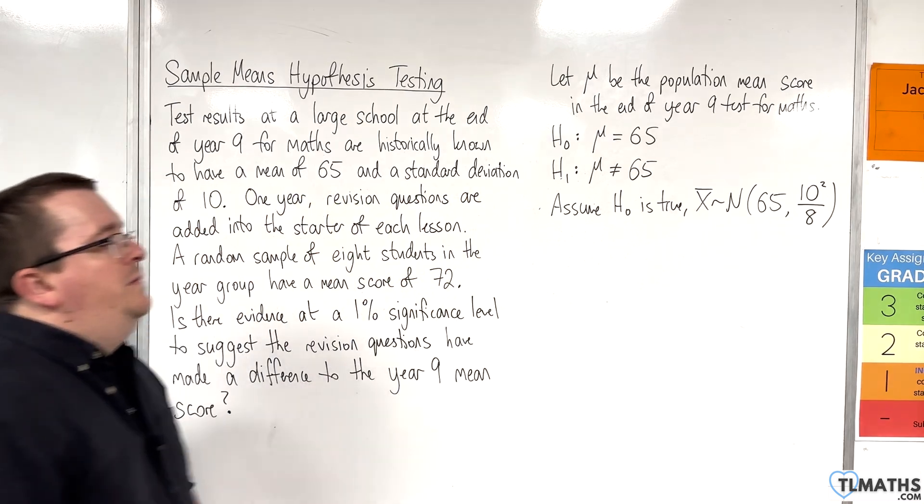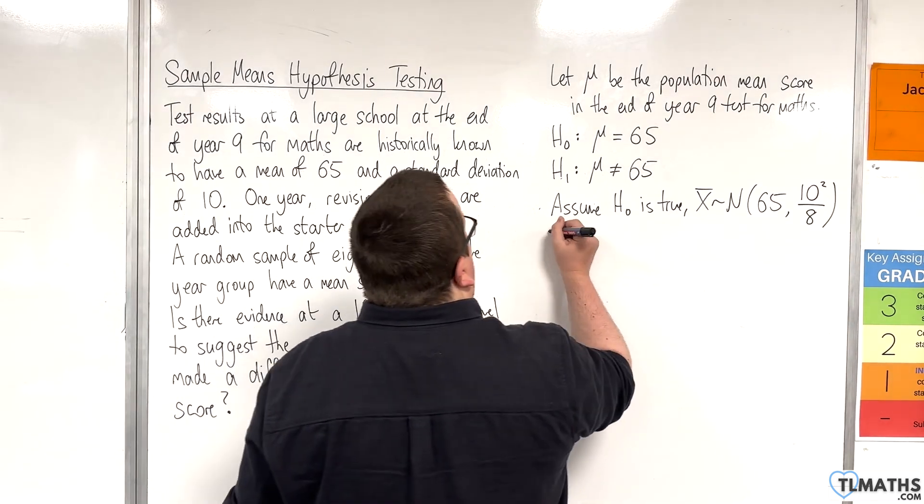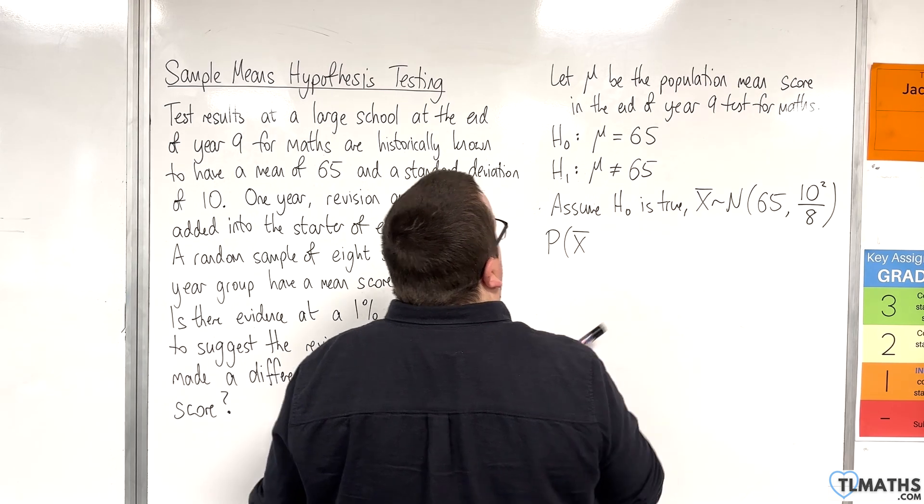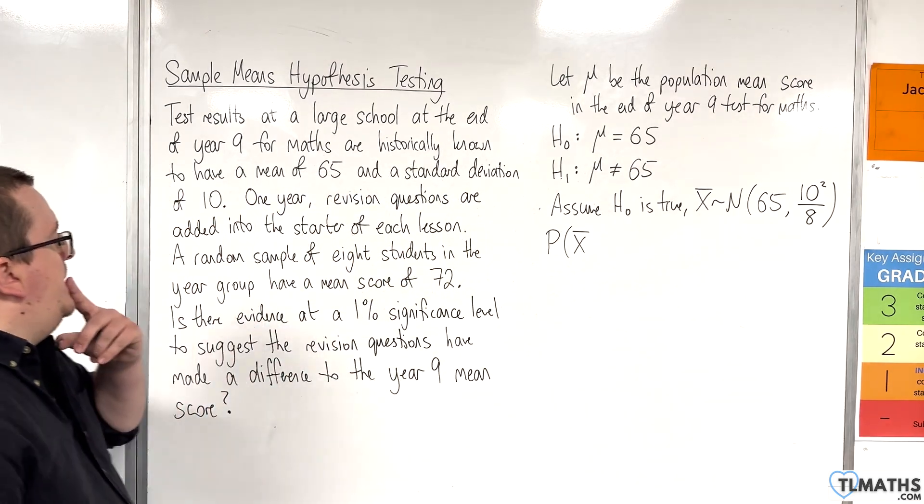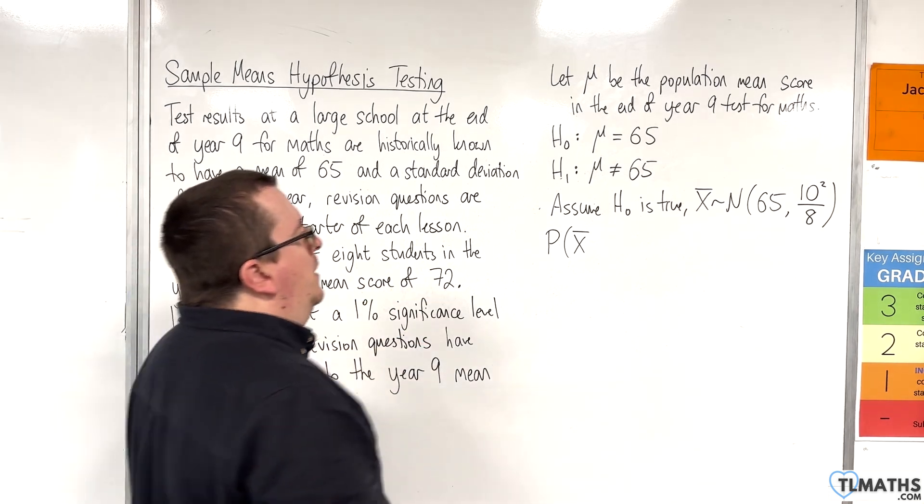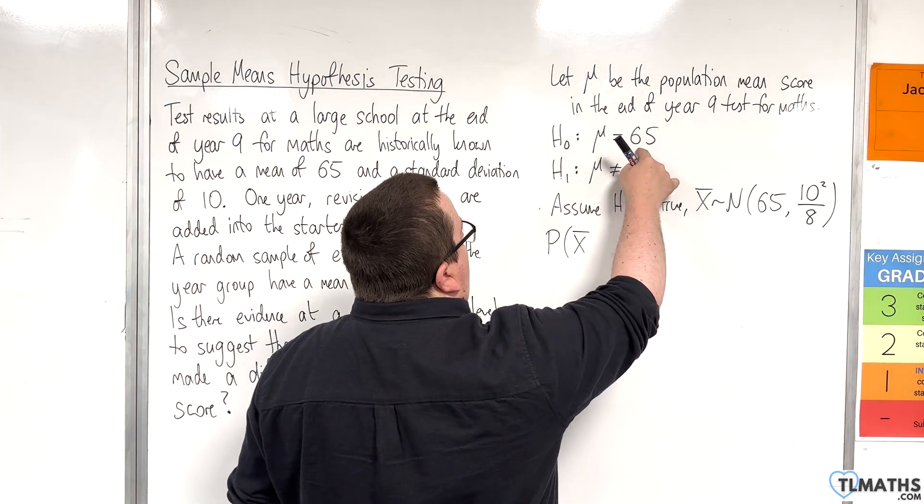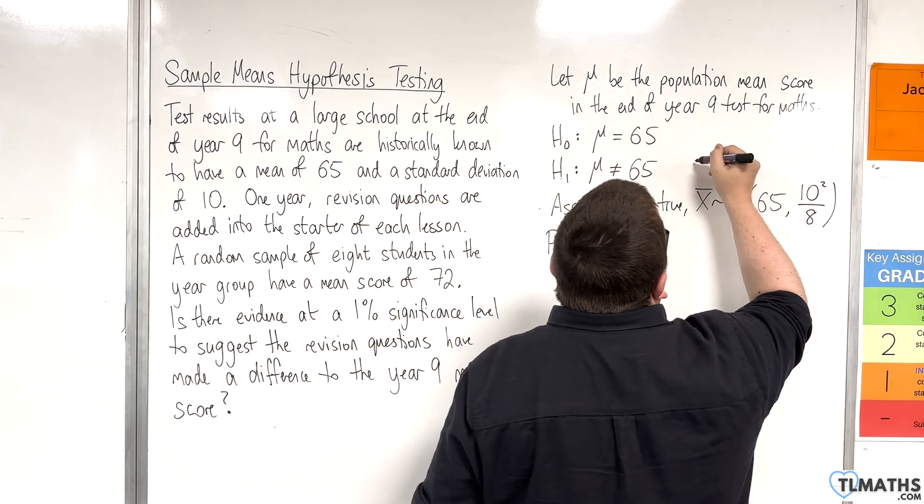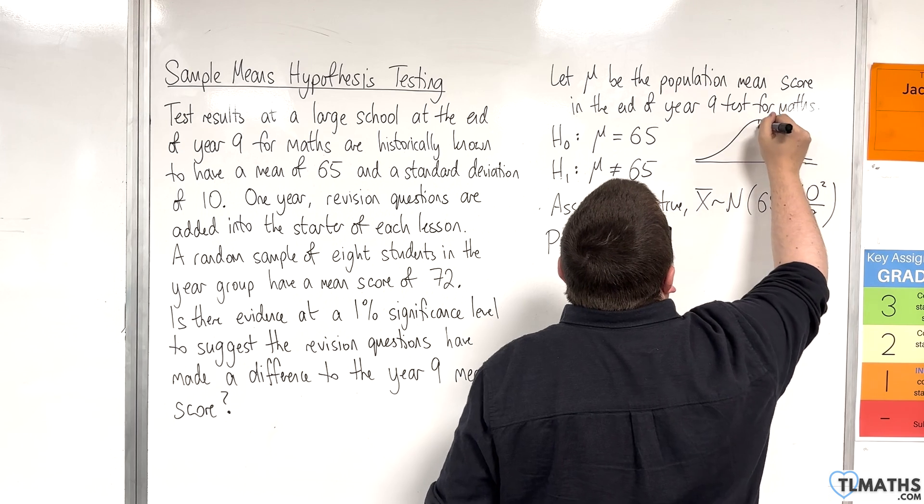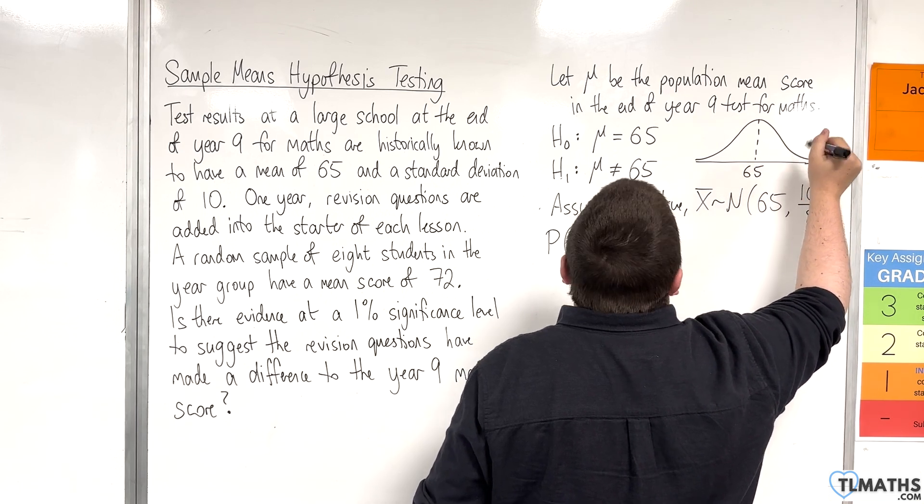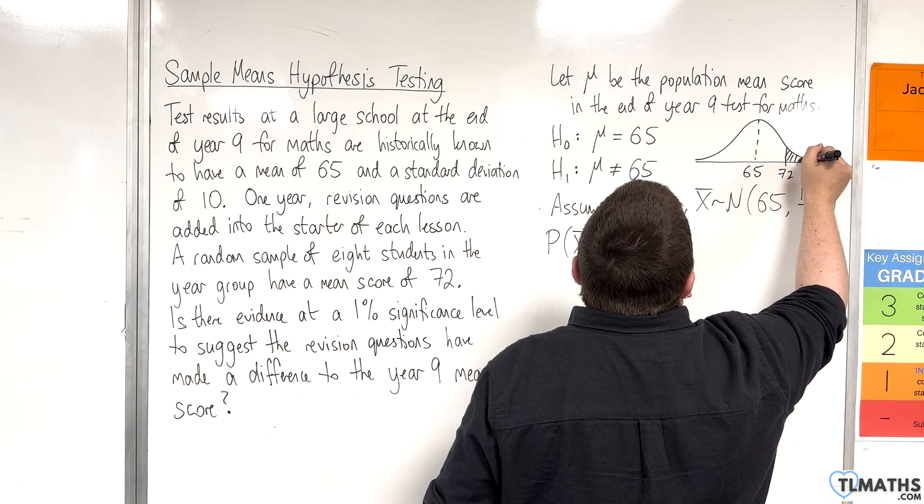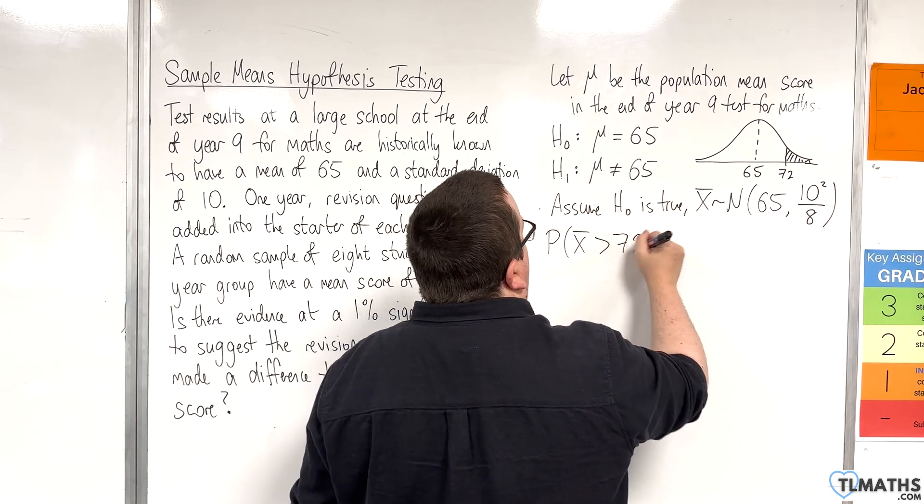Now, in this video, I'm going to use a p-value method. So, we're looking at the probability of X bar being, well, because the mean score here was 72 and the mean here is 65, you always want to work away from the mean. So, visually, here's your normal distribution. There's 65, and 72 is over here, so you want to work away from the mean. So, we're looking at greater than 72.